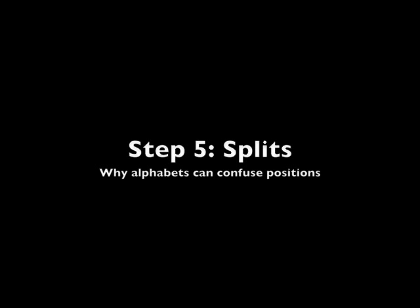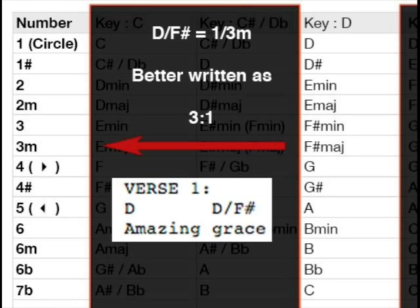I will show you now how to handle a slash chord. In this example, we see a slash chord on top of the word grace. After you have replaced the alphabets with the corresponding numbers, it's better that you flip the number positions around. 1 slash 3M would then be written as 3 colon 1. We do this to avoid confusion. 3 is thus played on the left side of the Cordica and 1 is played on the right.